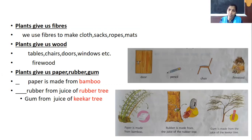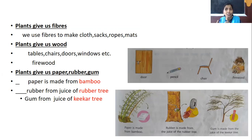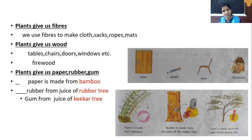Jute is another example of fiber. Plants also give us wood. We use wood to make tables, chairs, doors, windows, etc.